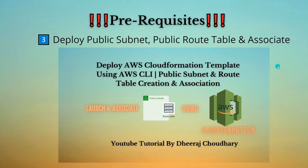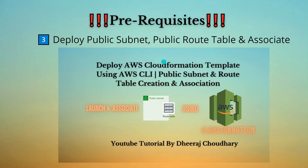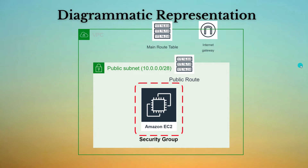The third prerequisite: make sure that you have a public subnet, and along with that public subnet, make sure you have a public route table and a public route which associates the public subnet to the public route table. I will paste the link for the specific video in the description above for your reference.